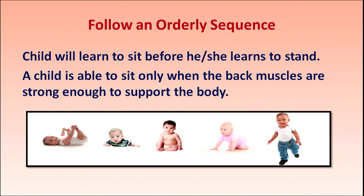Orderly sequence means the child must learn one activity before moving to the next. As shown in the picture: the child first lies down and plays with arms and legs; as back and head muscles strengthen, the child starts holding up the head; then sits independently, then crawls, then walks, then runs. The child cannot run before learning to sit — this is what orderly sequence means.